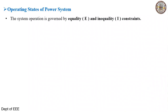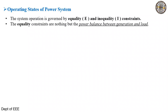To understand the block diagram and the various parameters, we should know what E and I quantities are. The system operation is governed by equality and inequality constraints, where E is with respect to power balance between generation and load — how much generation and how much load we have. That constraint is represented as E.